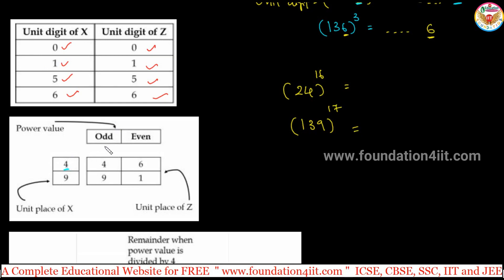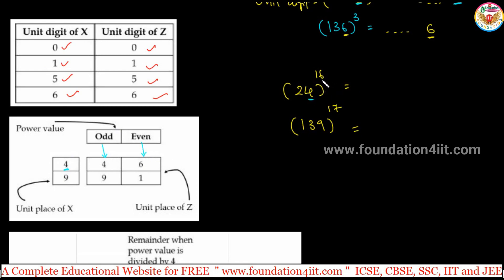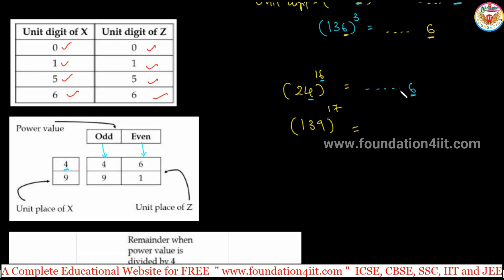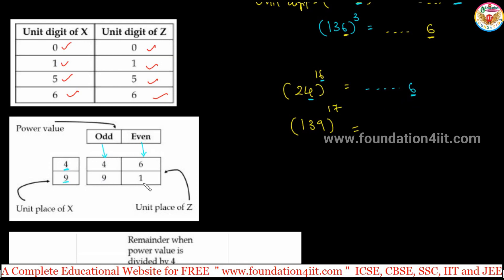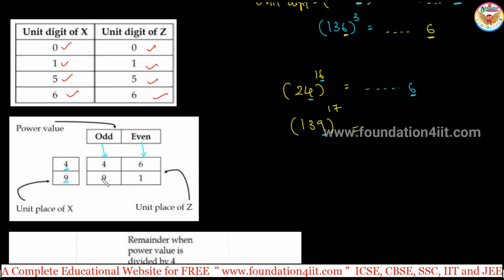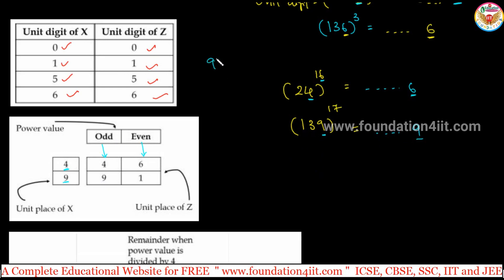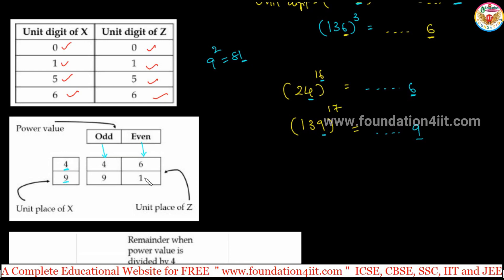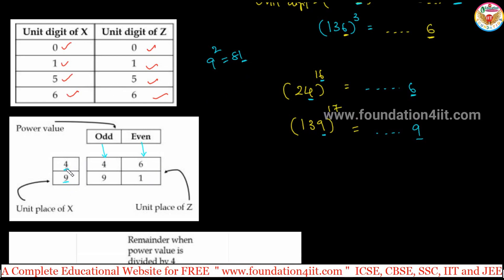Observe: if 4 is in the units place and the power is odd, you get 4; if the power is even, you get 6. Here the unit digit is 4 and the power is even, so the answer is 6. For 9: odd power gives 9, even power gives 1. In 139 to the power 17, unit digit is 9 and power is odd, so the answer is 9. Check: 9 times 9 is 81, so 9 to the power 2 gives unit digit 1 — even power gives 1.